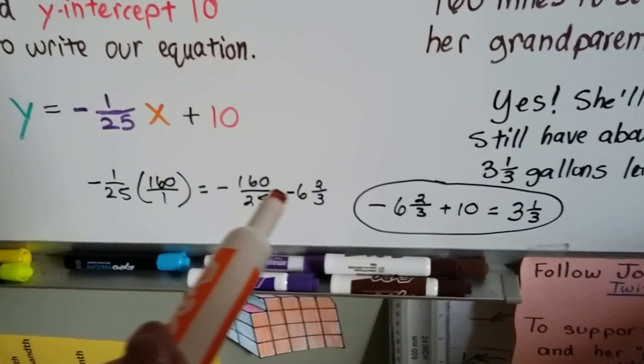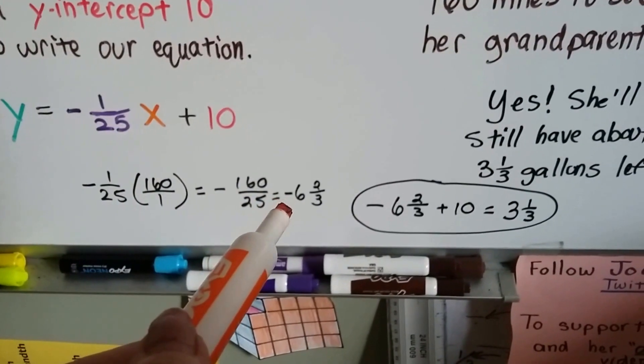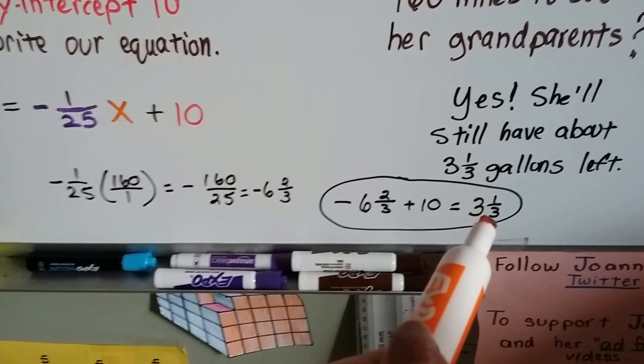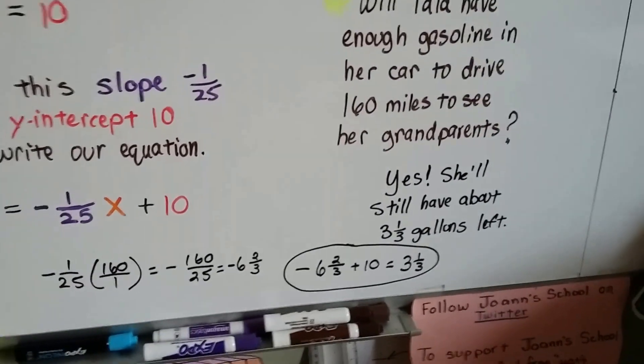Now we have negative 6 and 2/3, and we add 10. Remember, this is negative, so when we add the 10, we're going to have a positive 3 and 1/3. That's how much gas she's going to have left after she gets to her grandparents' house.